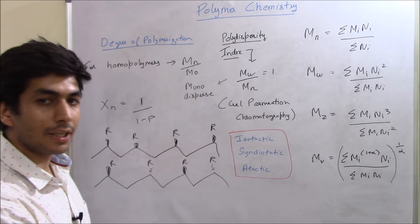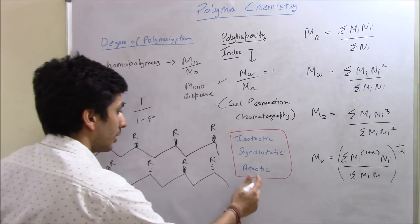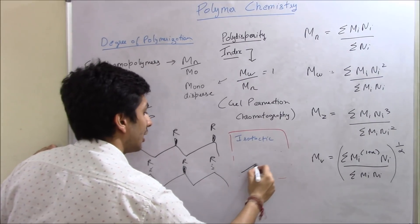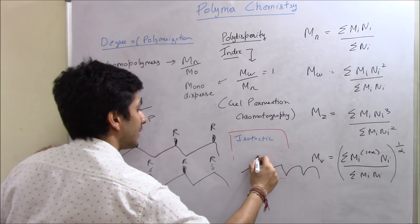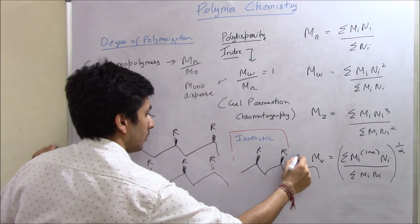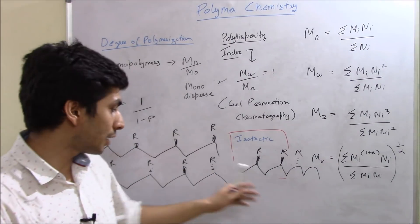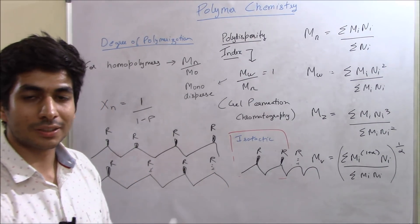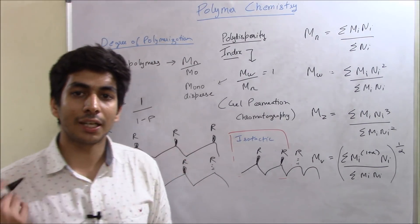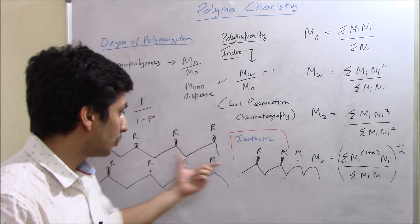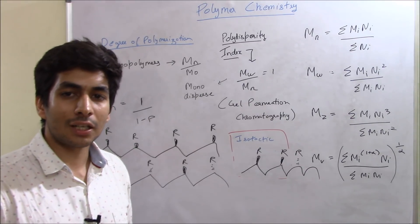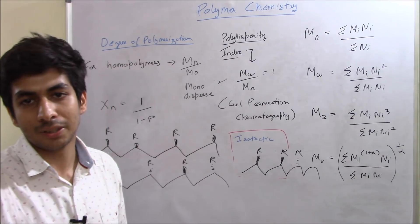And what is atactic? Atactic, I'll draw it over here. Atactic is basically, you have random orientation. There's no uniformity. It's just random, totally random. So atactic is random. Syndiotactic is uniform, but on the opposite sides, the R group is not present on the same side and isotactic, it's present on the same side. So again, a question can be framed from this that they'll give you this kind of polymer and they'll ask you what is it, whether it's eutactic, atactic, syndiotactic or isotactic. Eutactic is a little complex. I'll tell you maybe in some other video.